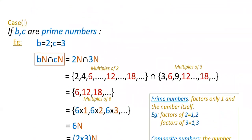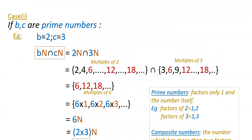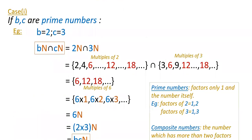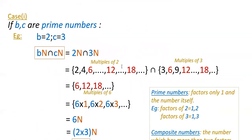So with B=2 and C=3, we compute 2N ∩ 3N. The set 2N is {2, 4, 6, ...} — multiples of 2 — and 3N is {3, 6, 9, ...} — multiples of 3. The common elements of these two sets, starting from 6, are 6, 12, 18, etc. Intersection means we take the common elements.